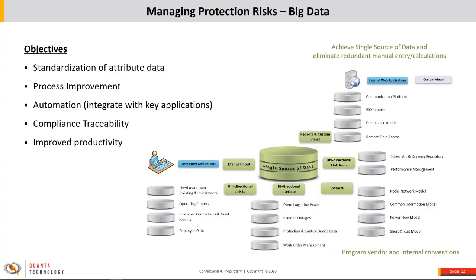You'd use this standardized attribute data company-wide, whether it's planning, operations, or engineering. You also want to improve the process and integrate key applications through automation by connecting different data sources — this allows you to have compliance evidence, traceability, and improved productivity. There's no single database that everyone at a utility enters data into, but you should strive toward a single source of data by highly standardizing, connecting, and integrating these different databases company-wide, allowing protection engineers to take advantage of data from other departments.